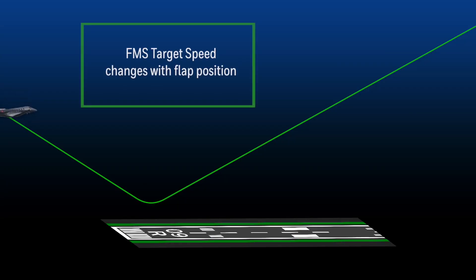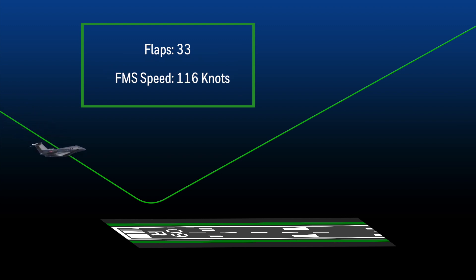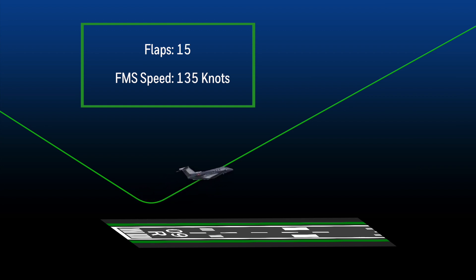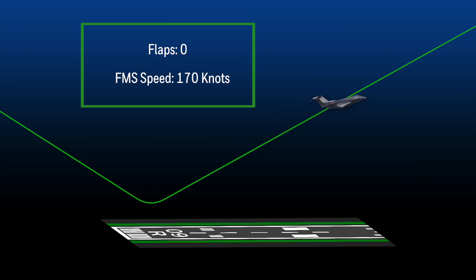In the event of a go-around, the FMS target speed also changes with flap position. During the initial go-around with the flaps at 33, the FMS target speed is 116 knots. As the flaps are retracted, the target speeds increase up to 170 knots with flap 0.